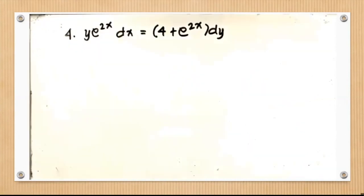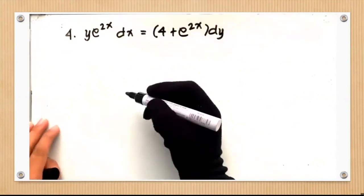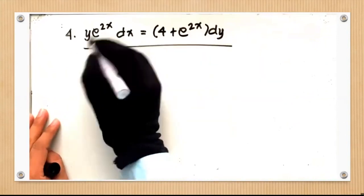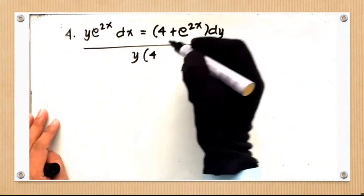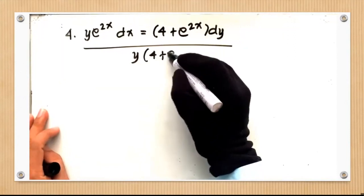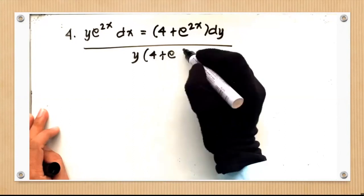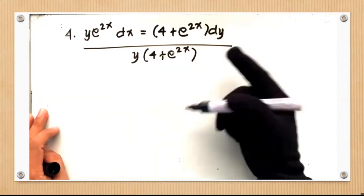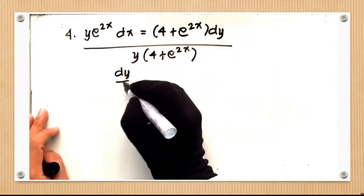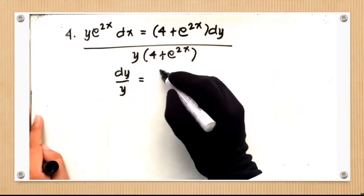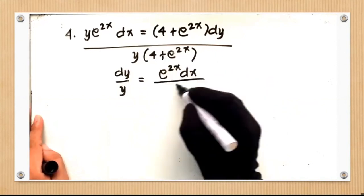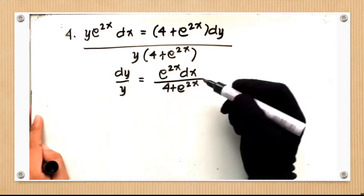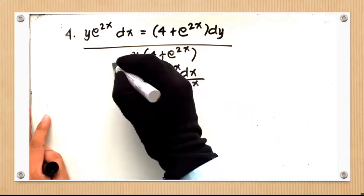The next example: y · e^(2x) dx = (4 + e^(2x)) dy. To separate: the left side has dx, so divide by y to get a pure function of x. The right side has dy, so divide by (4 + e^(2x)) to get a pure function of y. This gives dy over y equals e^(2x) dx over (4 + e^(2x)).